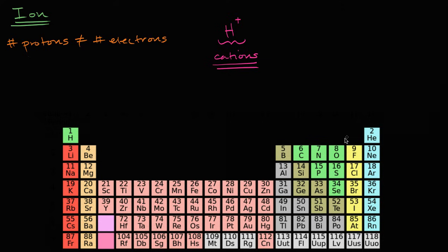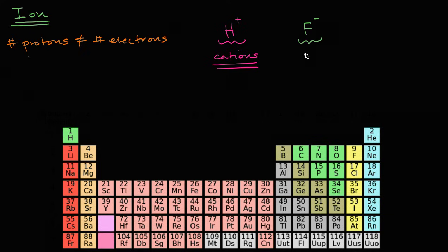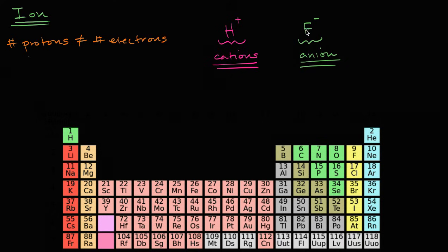Likewise, we can have negative ions. For example, fluorine gains an electron, so it's going to have a net negative charge — a charge of negative one. A negative ion we call an anion. The way I remember this is that 'a' kind of means the opposite or the negation of something, so this is a negative ion. With that out of the way, let's think about how hard it will be to ionize different elements in the periodic table — in particular, how hard it is to turn them into cations.